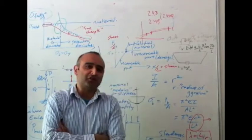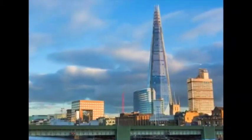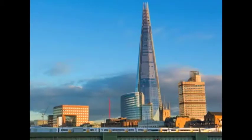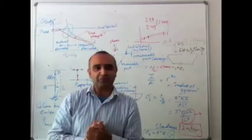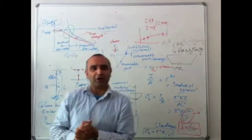For example, if you wanted to design the Shard, which is a great big tall structure in the center of London, this has massive long columns and you want those columns not to break because of the massive dead load that's on.